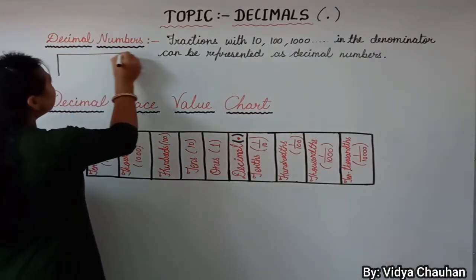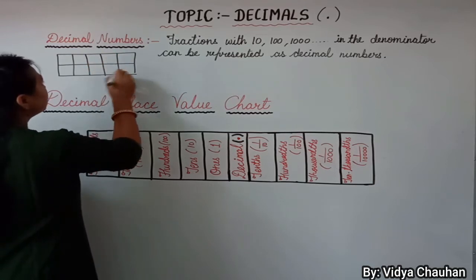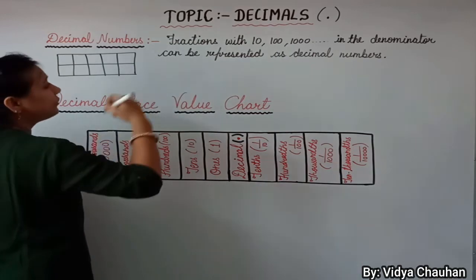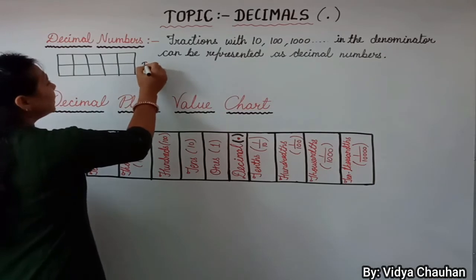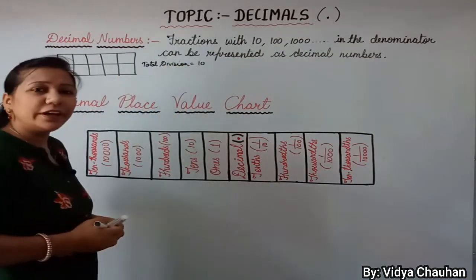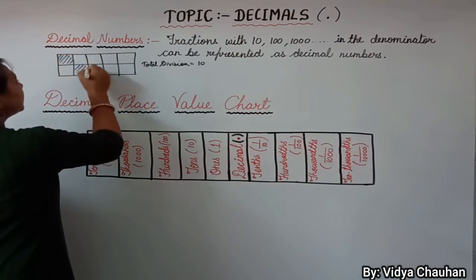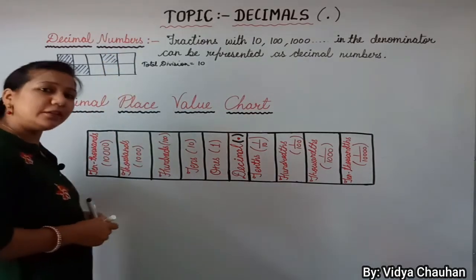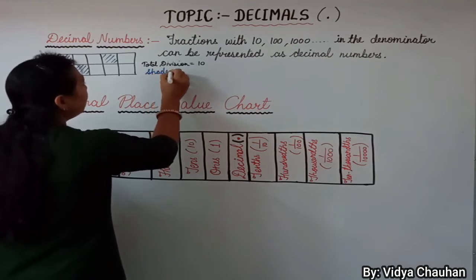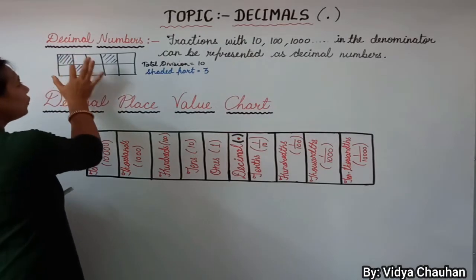Let's understand the concept by taking an example. Suppose I am taking a rectangular box and dividing it into ten equal portions. As you have already studied in the fractions chapter, the total number of divisions is ten — that means this complete box is divided into ten equal parts. Now out of these ten equal parts, if I shade any three parts, the number of shaded parts is three and the total number of divisions is ten.